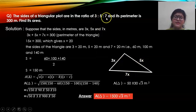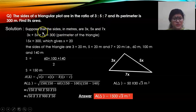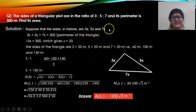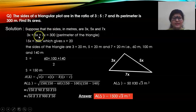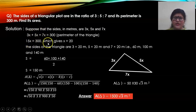When a ratio like this is given, start off by writing: let the common multiple be x. Therefore, the three sides are 3x, 5x, and 7x. The perimeter is given as 300 meters, so add the three sides: 3x plus 5x plus 7x equals 15x equals 300. From that, you get the value of x as 20.